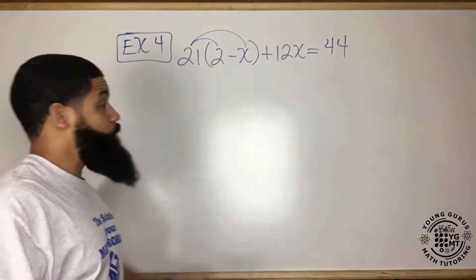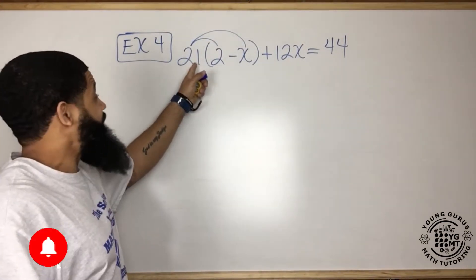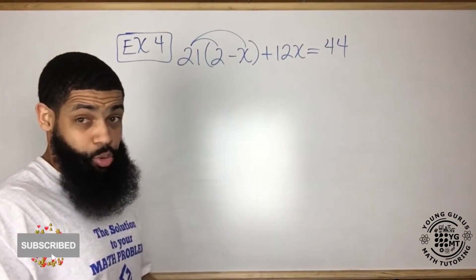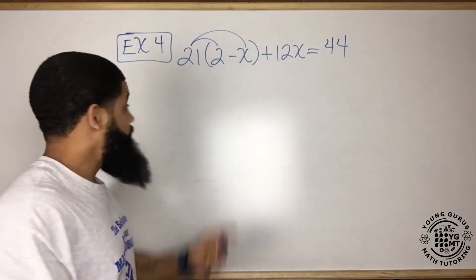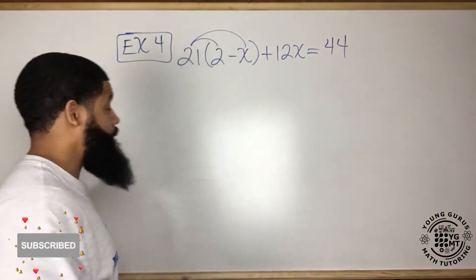Distributive property right there. Remember, if the number is right next to the parentheses, you use the distributive property. If there's a plus or a minus sign between them, you do not have to.